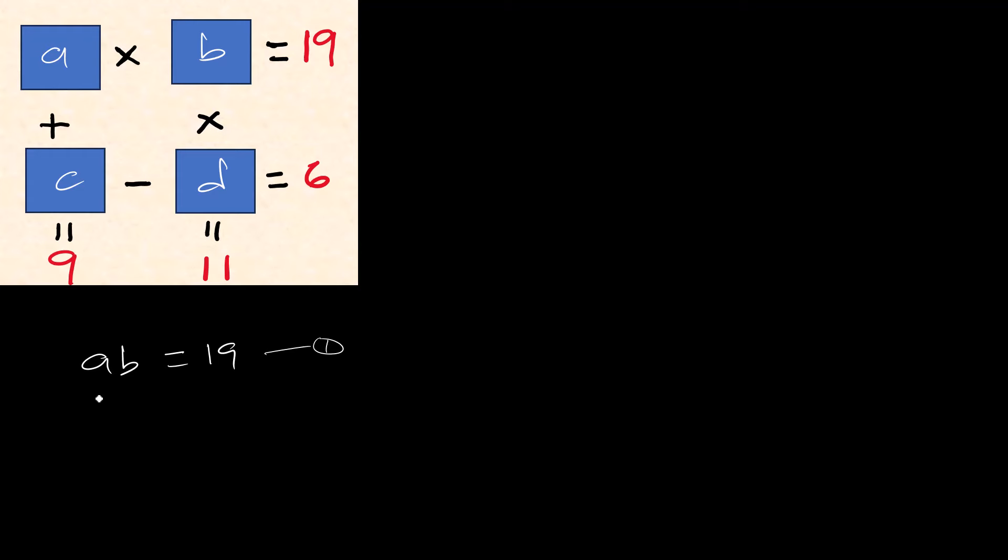Then b times d, it's 11. So equation 2. Alright, so let's add equations 1 and 2. So this one will be ab plus bd equals to 30.